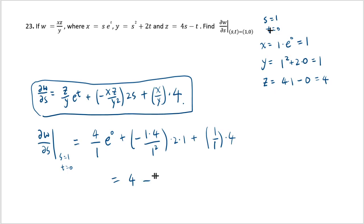And it just became 0, but that's just a coincidence. It's not intended. Usually it's something else, but what it means is that when s is 1 and t is 0, in terms of s, w doesn't change at all when you change s slightly. So the rate of change of w with respect to s is 0, that's what it means.